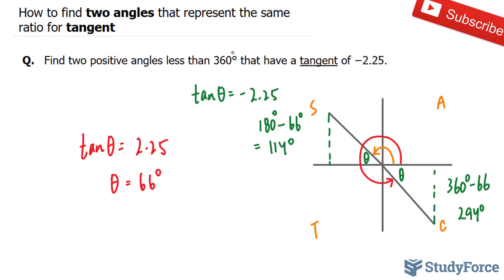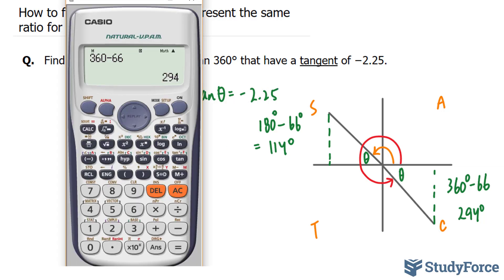And just to double check, let's put these numbers back into tangent to see if we get this ratio. Tangent of 114 is equal to negative 2.24, which is awfully close to this.